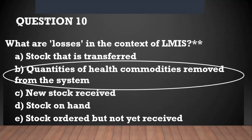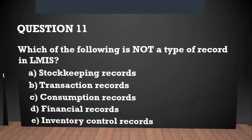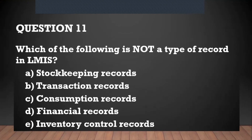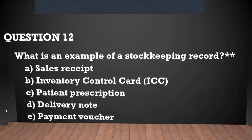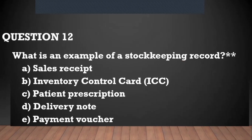Losses occur because of transferring commodities out, expiring, and so on. Question number eleven: which of the following is not a type of record in LMIS? We don't deal with financial records in LMIS — we leave those to the finance people. Question number twelve: what is an example of a stock keeping record?